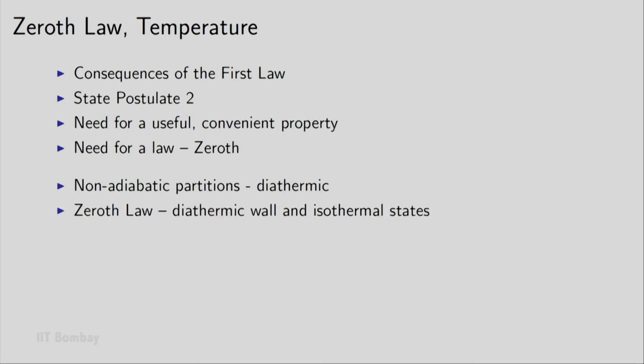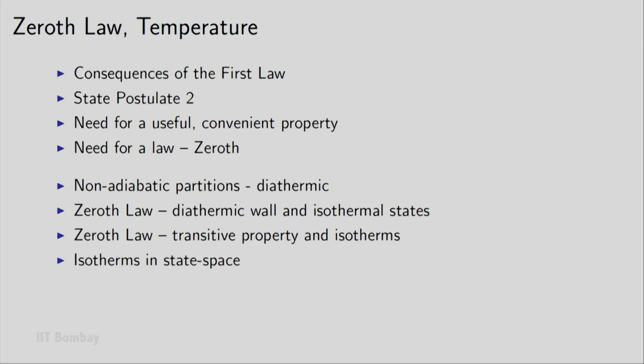So using this diathermic boundary, we will state the zeroth law. We will define that the zeroth law leads to the definition of what we call isothermal states. The second part of the zeroth law — the transitive property — will lead to the idea of isotherms. We will look at how isotherms exist in state space.